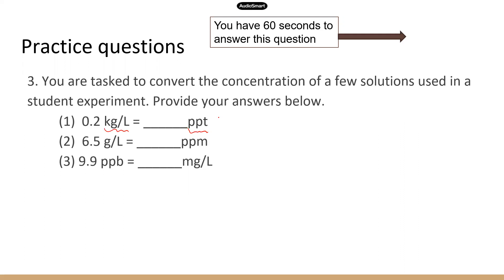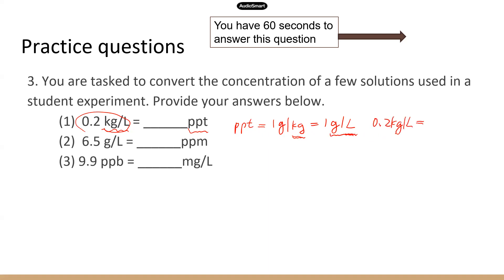You need to remember PPT — parts per thousand — is one gram per kilogram or one gram per liter. That's because one liter of water is one kilogram, so you can convert this weight-based unit to a volume-based unit and they're the same. Your goal is to convert this number to something based on gram per liter, and that will be PPT.